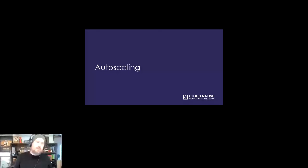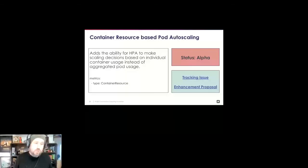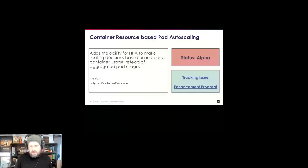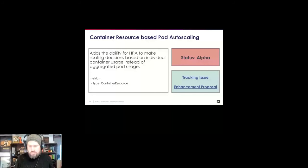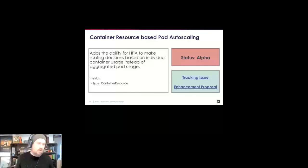Moving to autoscaling: the HPA can now scale based off an individual container instead of aggregated pod usage. It does this by adding a new container resource metric type. In the YAML for defining HPA, under metrics, you can define new metrics at the container level and make scaling decisions based on those. This is especially useful for multi-container pods with sidecars that might skew the aggregated resource consumption view.